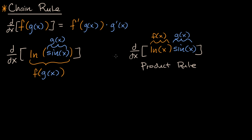Always make sure, especially with these transcendental functions, that if this is a composition, you've got to use the chain rule, not the product rule — it's not a product. Now sometimes you have a product of compositions and things get a little more involved. But pay close attention to make sure that you're not dealing with a composition.